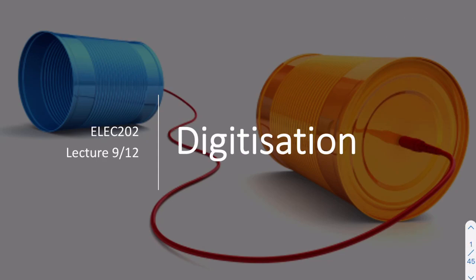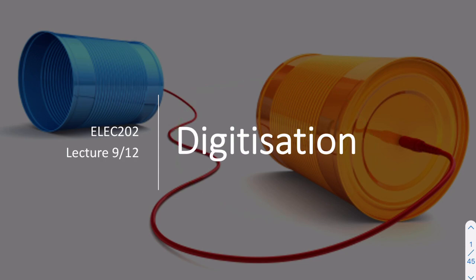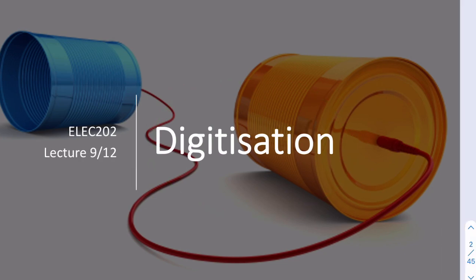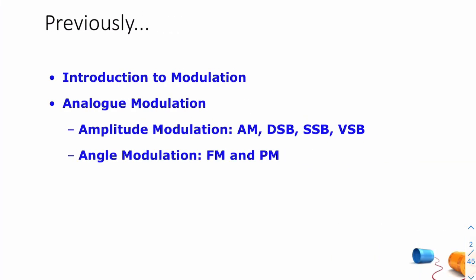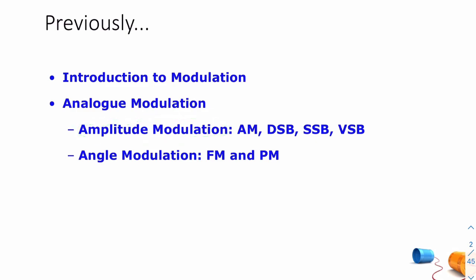Hello and welcome to Lecture 9, where we'll be talking about digitization. In the previous few lectures, Lectures 1 to 7, we've spoken about modulation — we've introduced modulation, we've spoken about the types of analog modulation, including amplitude modulation and the different variants of amplitude modulation, and angle modulation and the different variants of those.